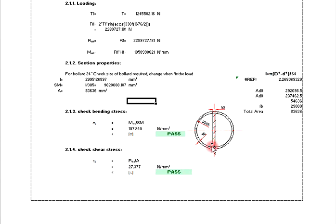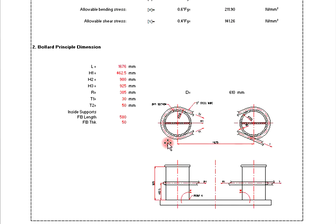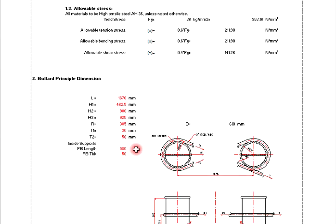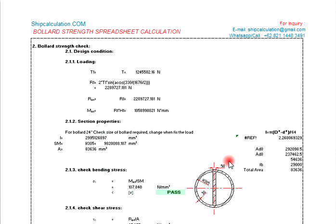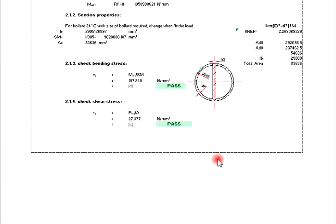We get the automatic result — the total area is 1636. As long as you change the dimension here — the radius, the height, and the length — everything will automatically update and you will get the result.